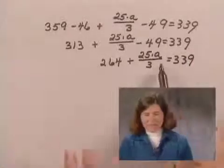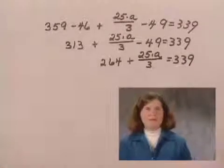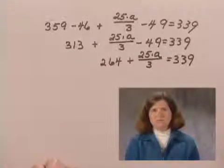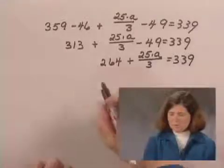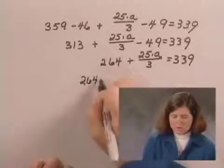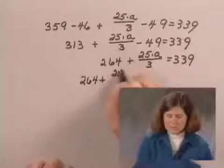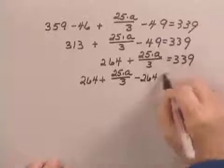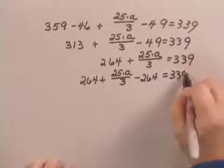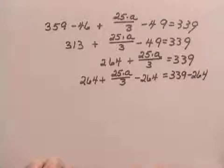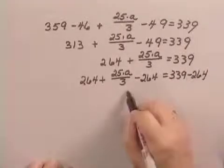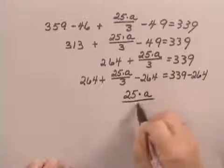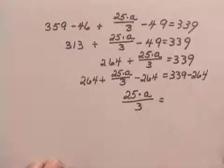Now, I can't really simplify the left side of the equation any farther, but I can subtract 264 from both sides. Subtracting 264 plus 25 times A over 3 minus 264 equals 339 minus 264. And on this side now, I just have the one expression that has the variable in it, 25 times A divided by 3. And on the right side, I have 75.